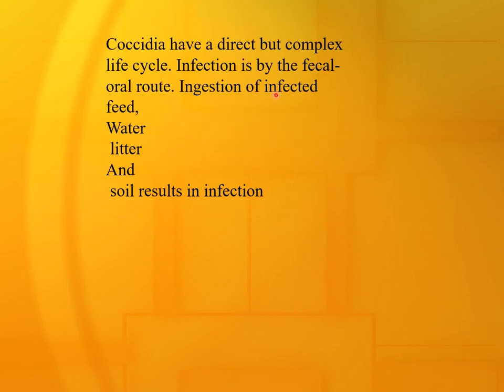Coccidia have a direct but complex life cycle. Infection is by the fecal-oral route. Ingestion of infected feed or water, litter, and soil are routes of infection.